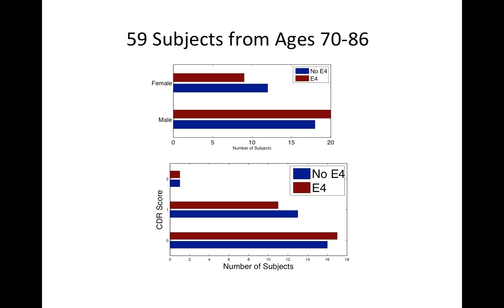So as I said before, these are non-focal damages, so it's very difficult to see in one subject. So we're going to do it in 59 subjects from ages 70 to 86. We have a distribution of subjects with the E4 genotype and those that don't have the E4 gene whatsoever.